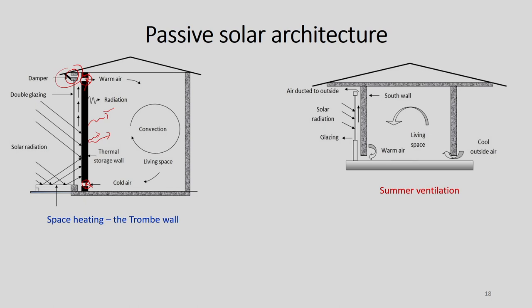One more configuration maintains summer ventilation. On a summer day when it is too hot, we need to remove hot air from the room. If the room has glazing receiving solar radiation, cold outside air is introduced through a vent at the bottom, passes through the room, and exits through a hole at the top to maintain room temperature at a suitable level.